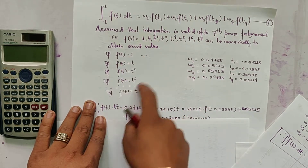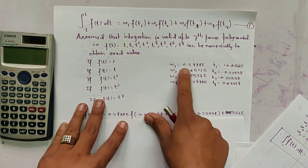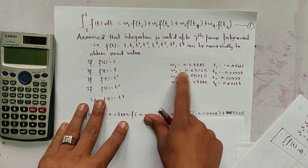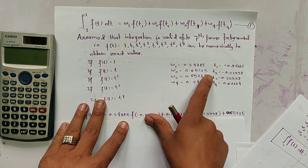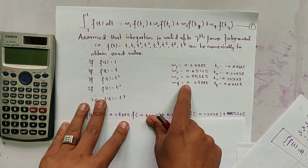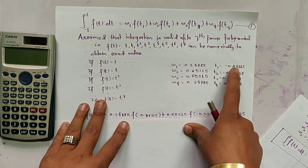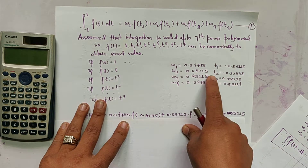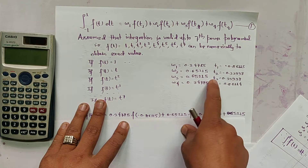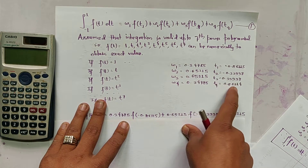So we get altogether 8 equations, and by solving these 8 equations we get: w1 = 0.34785, w2 = 0.65215, w3 = 0.65215, w4 = 0.34785. Similarly, t1 = −0.86115, t2 = −0.33998, t3 = 0.33998, and t4 = 0.86114.